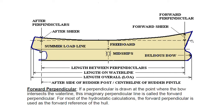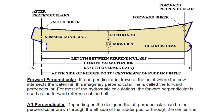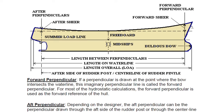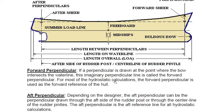The forward perpendicular is a perpendicular drawn at the point where the bow intersects the waterline. This imaginary perpendicular line is called the forward perpendicular. For most hydrostatic calculations, the forward perpendicular is used as the forward reference of the hull — not the length overall line.